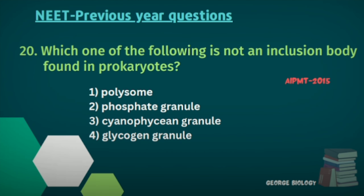Question nineteen: Which one of the following is not an inclusion body found in prokaryotes? Options: polysome, phosphate granule, cyanophycean granule, glycogen granule. Phosphate granule, cyanophycean granule, and glycogen granule come under inclusion bodies. The suitable answer is polysome.